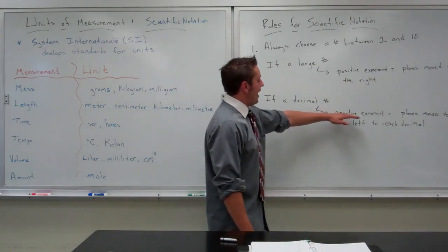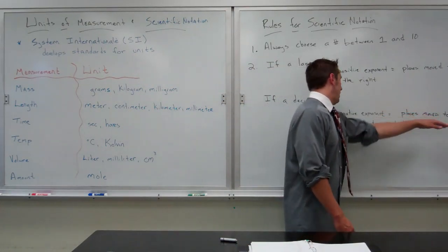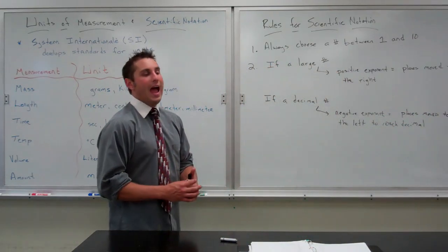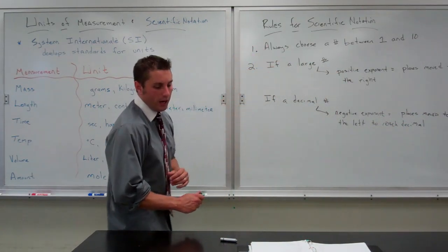If it's a decimal number, we will write a negative exponent. The exponent equal to the places moved to the left to reach the decimal after we choose the number between 1 and 10.